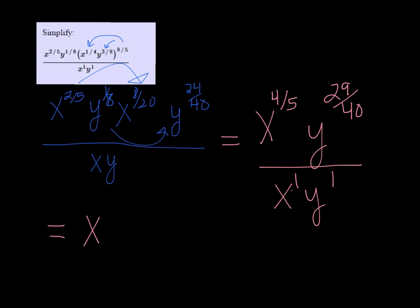So four-fifths minus one would be negative one-fifth. And 29 over 40th minus one is equal to negative 11-fortieths.